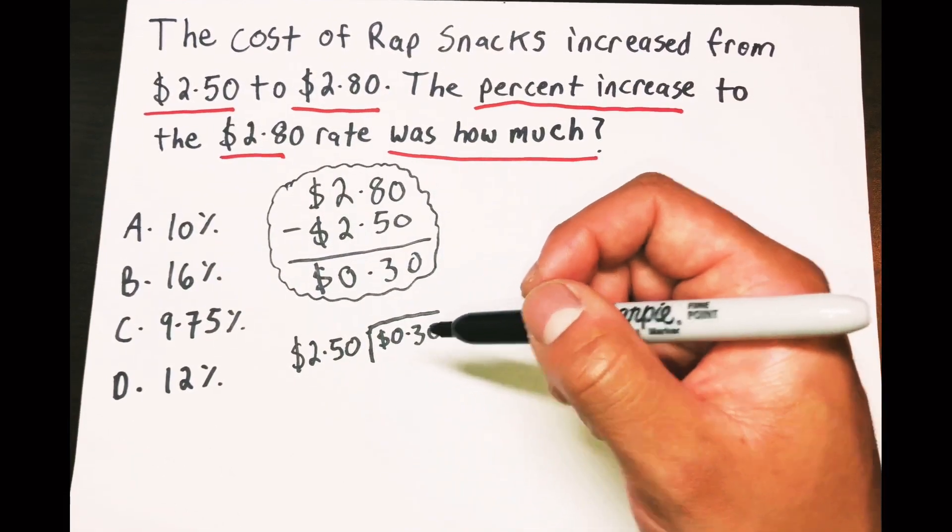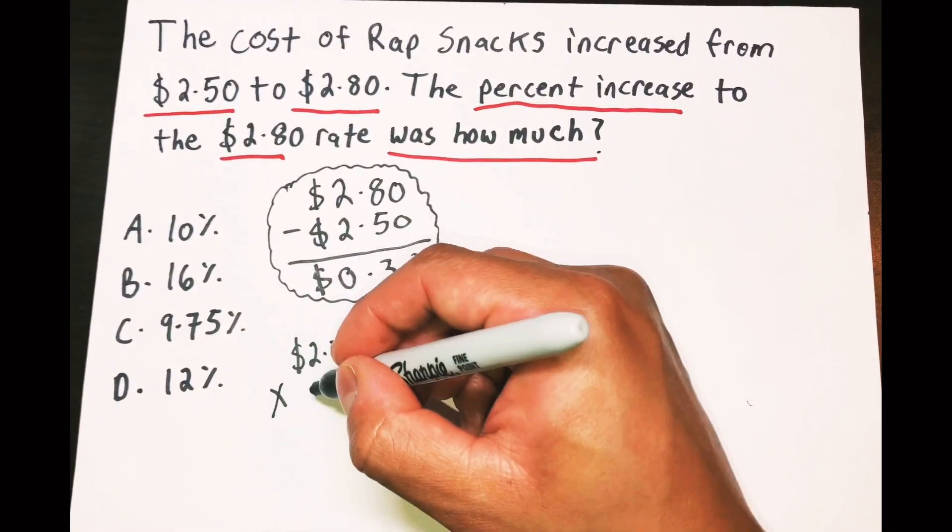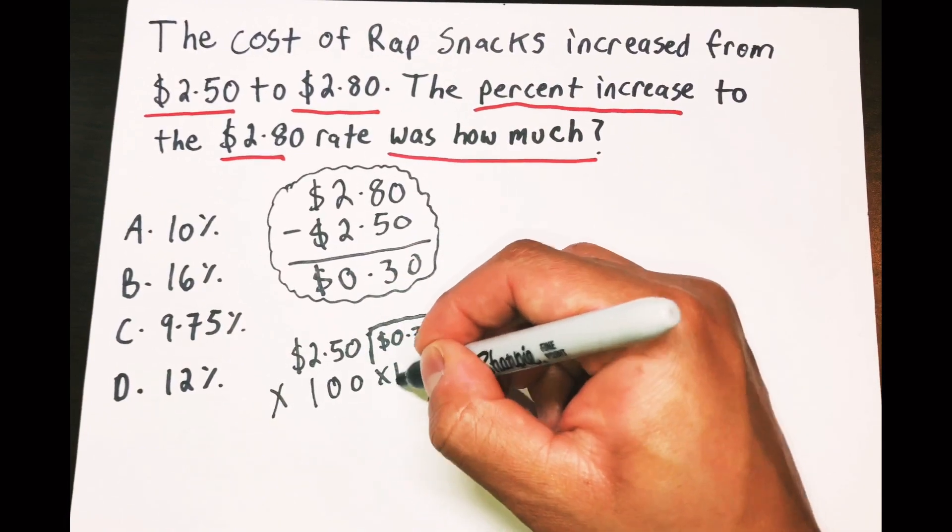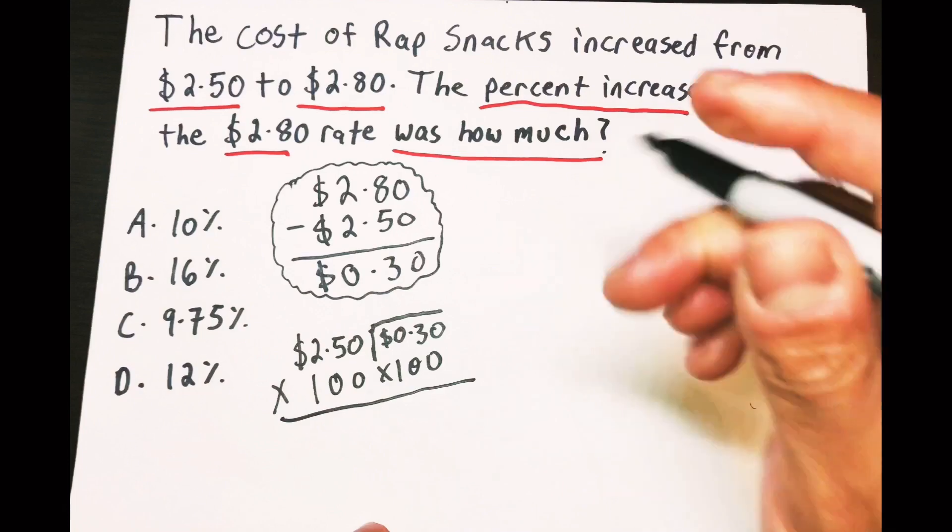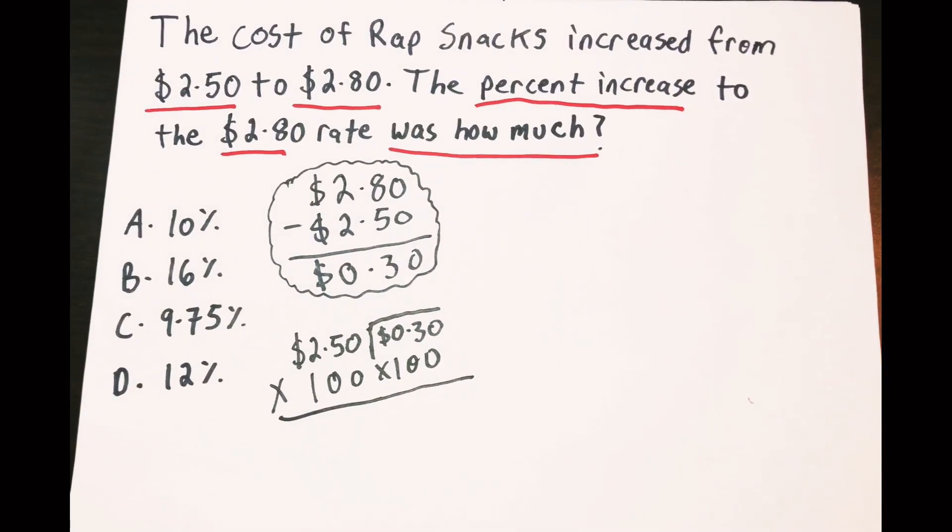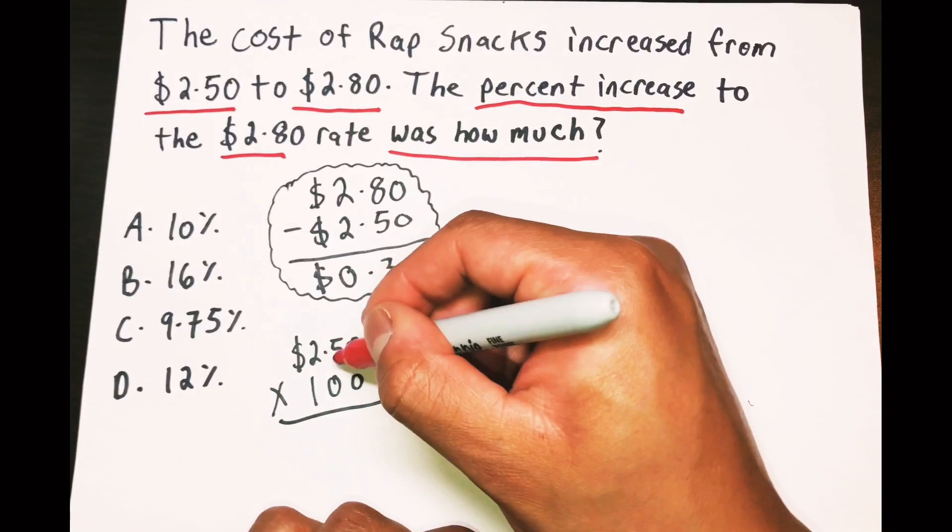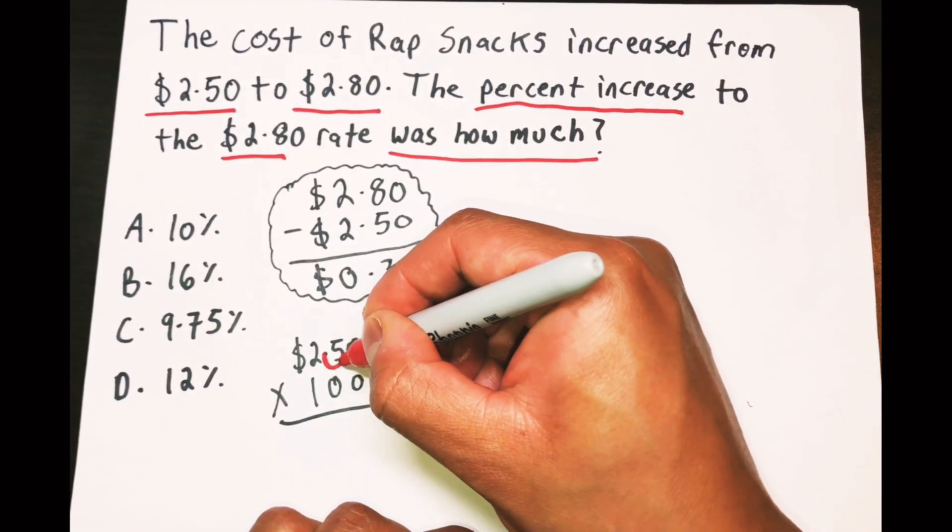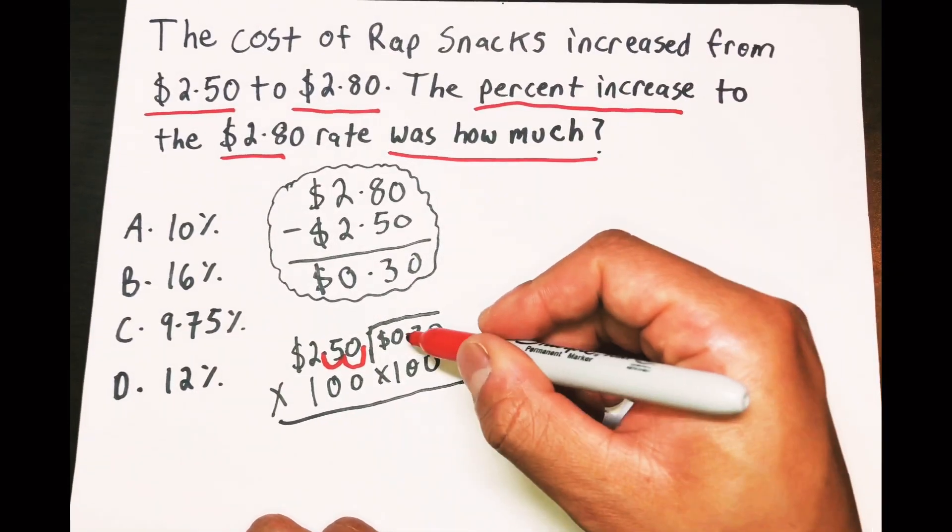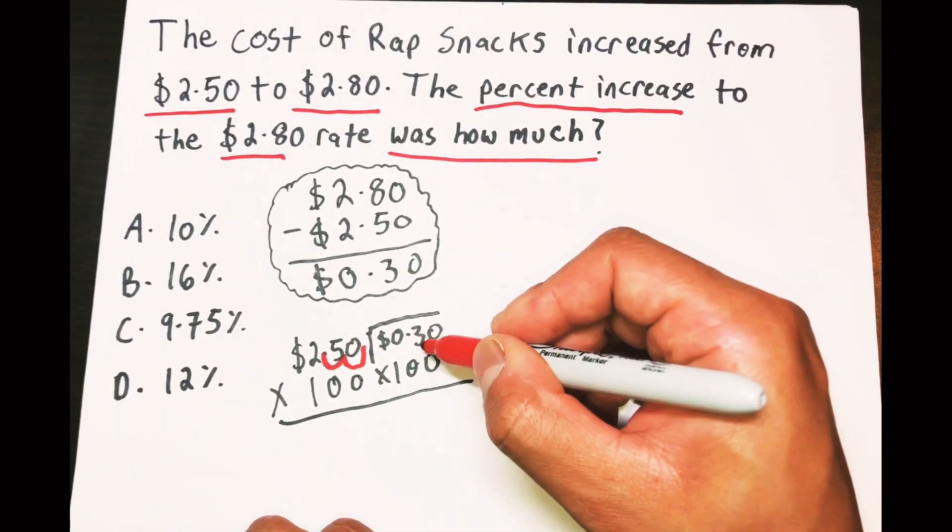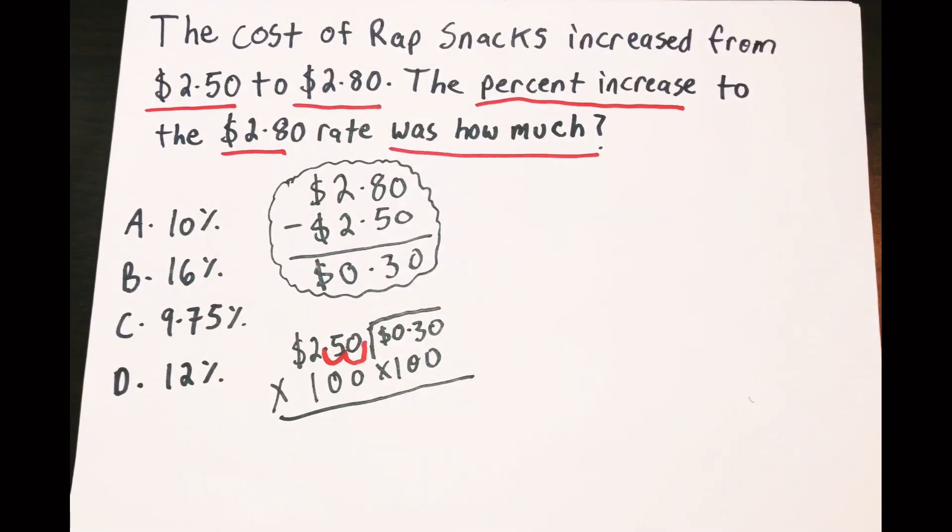So we got to do some finesse. Alright, so I'm gonna multiply this times 100 and I'm gonna multiply this times 100. Now remember when I multiply anything times 10 it moves the decimal. When I multiply this one by 10 it'll move it one time to the right, and if I multiply times 100 it'll move it two times to the right. And that's the same thing with this, you move it two times.